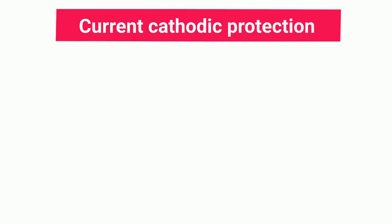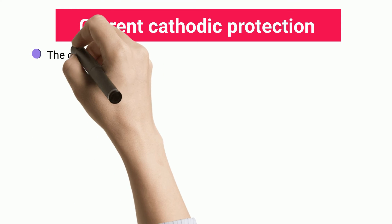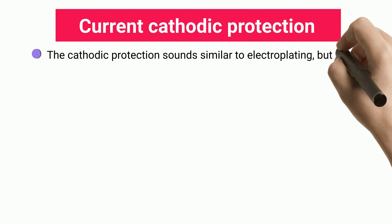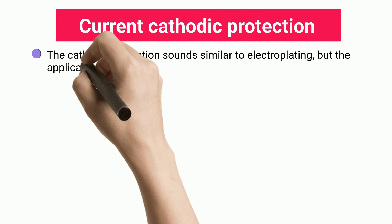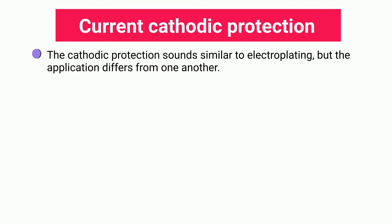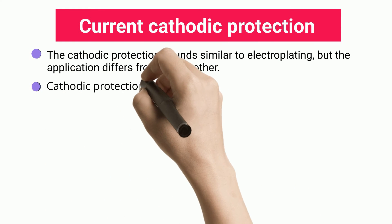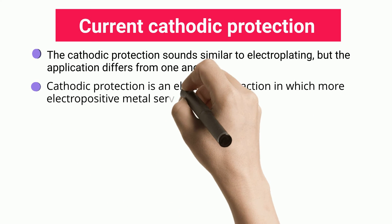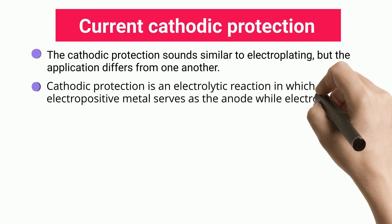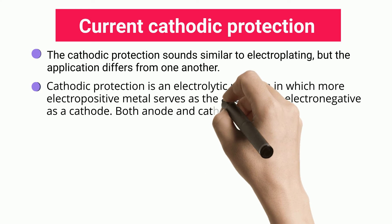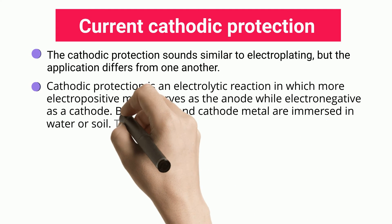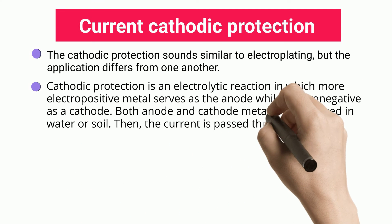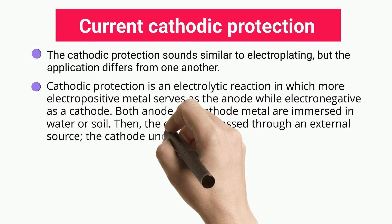Cathodic Protection. The cathodic protection sounds similar to electroplating, but the application differs from one another. Cathodic protection is an electrolytic reaction in which a more electropositive metal serves as the anode while an electronegative metal serves as the cathode. Both anode and cathode metals are immersed in water or soil.